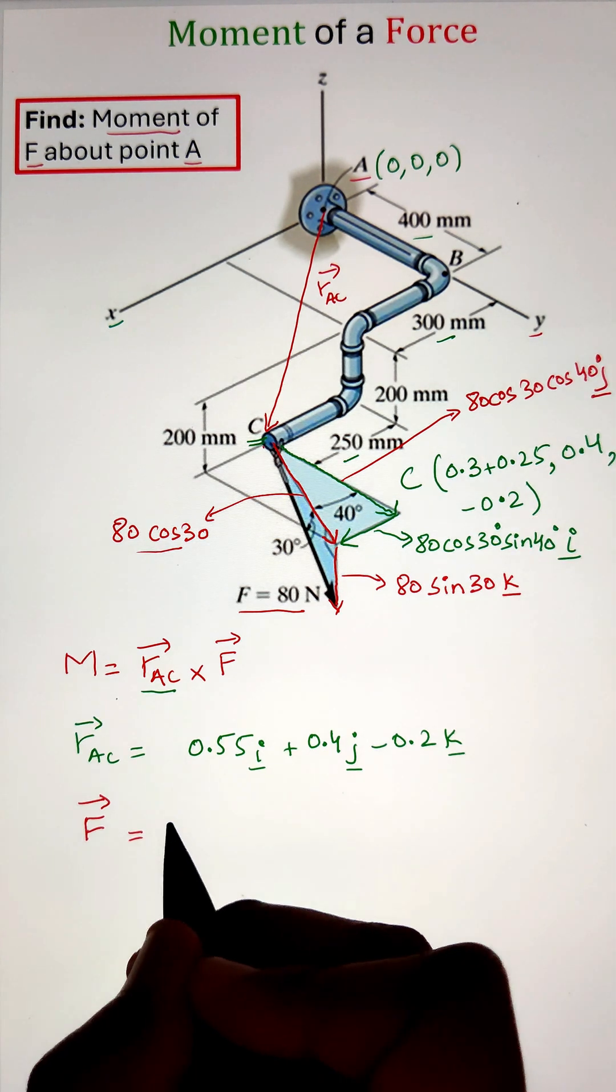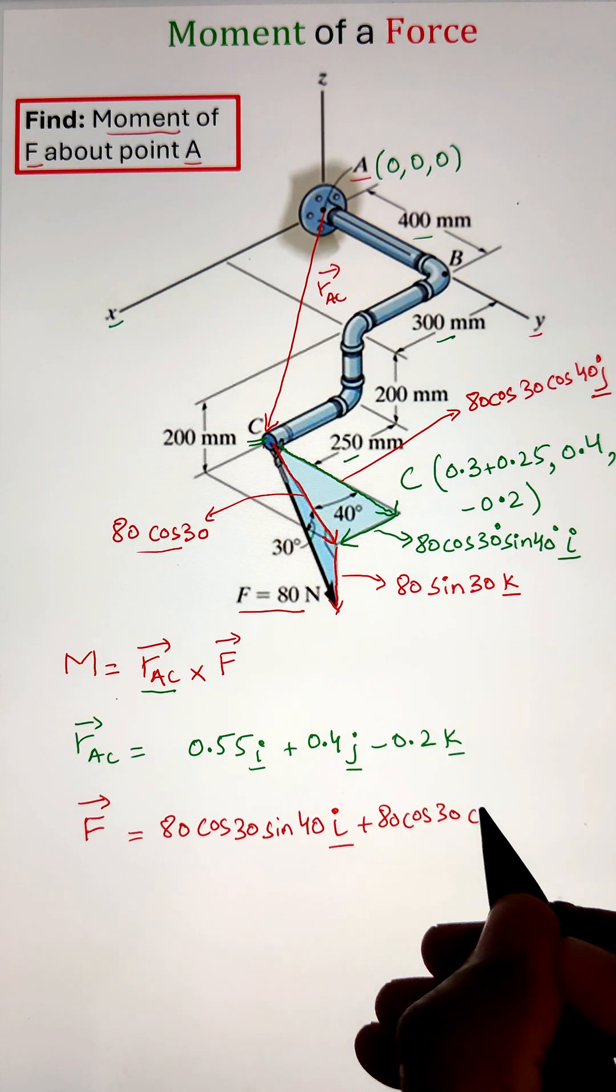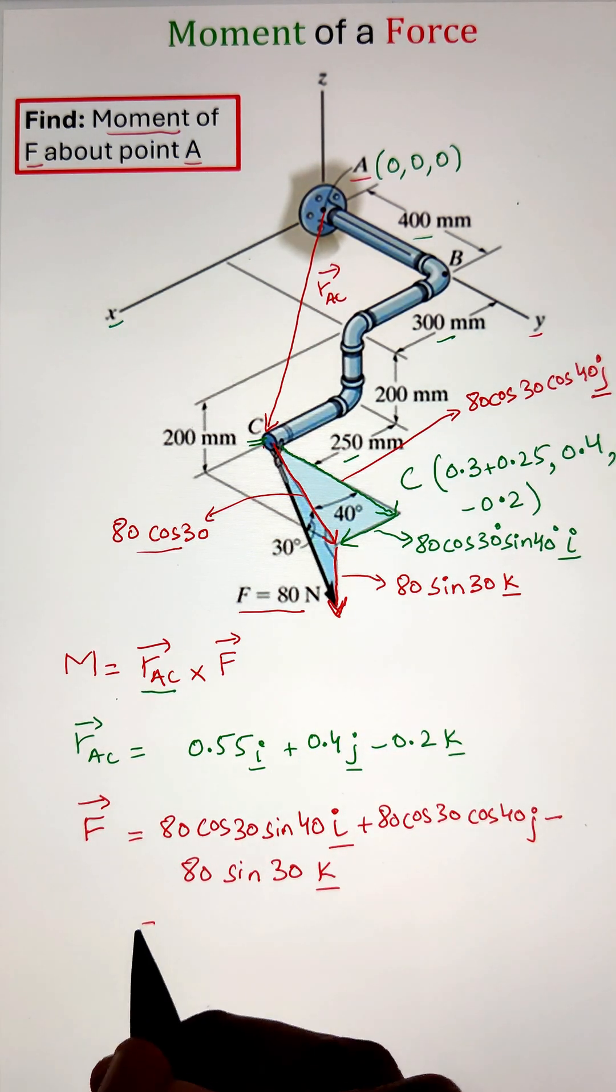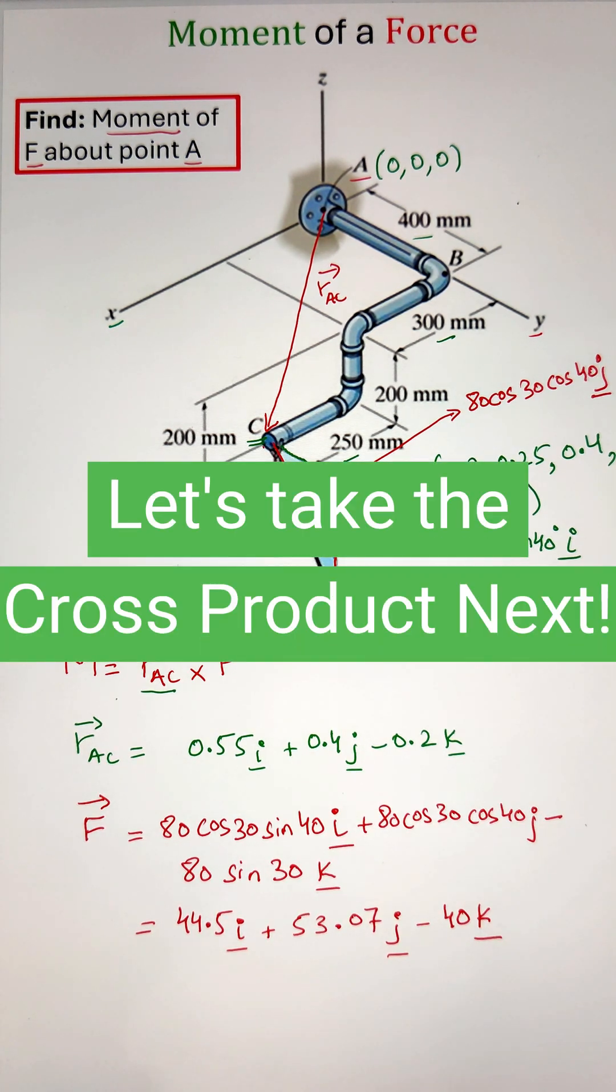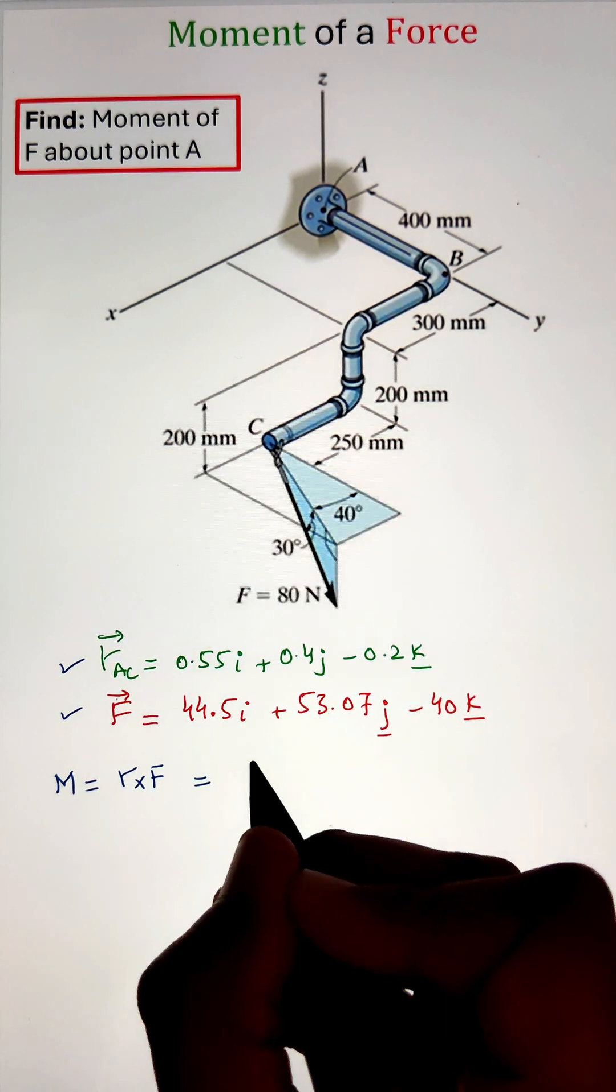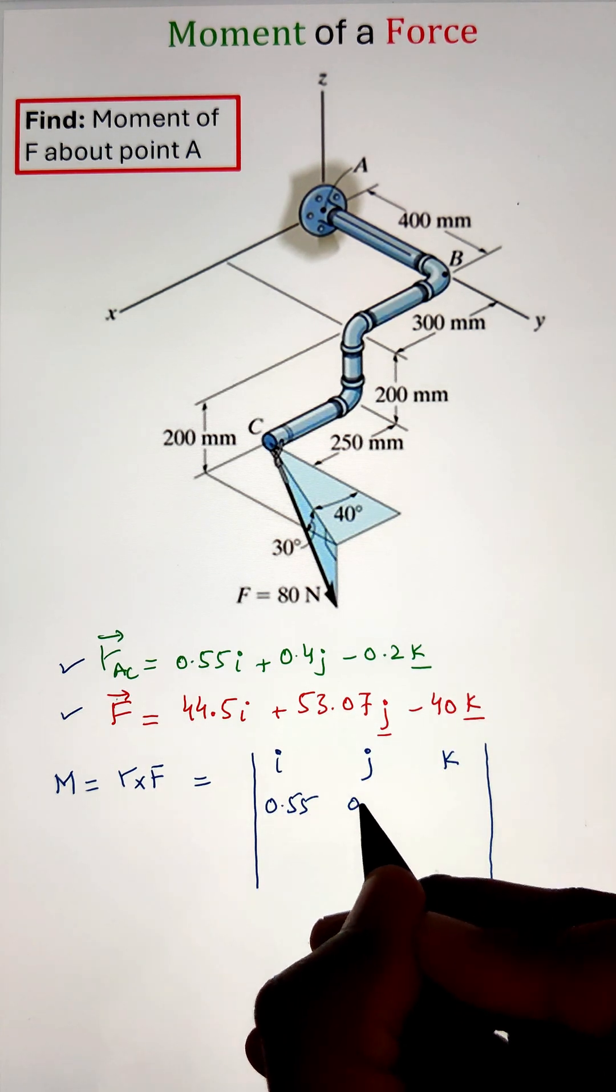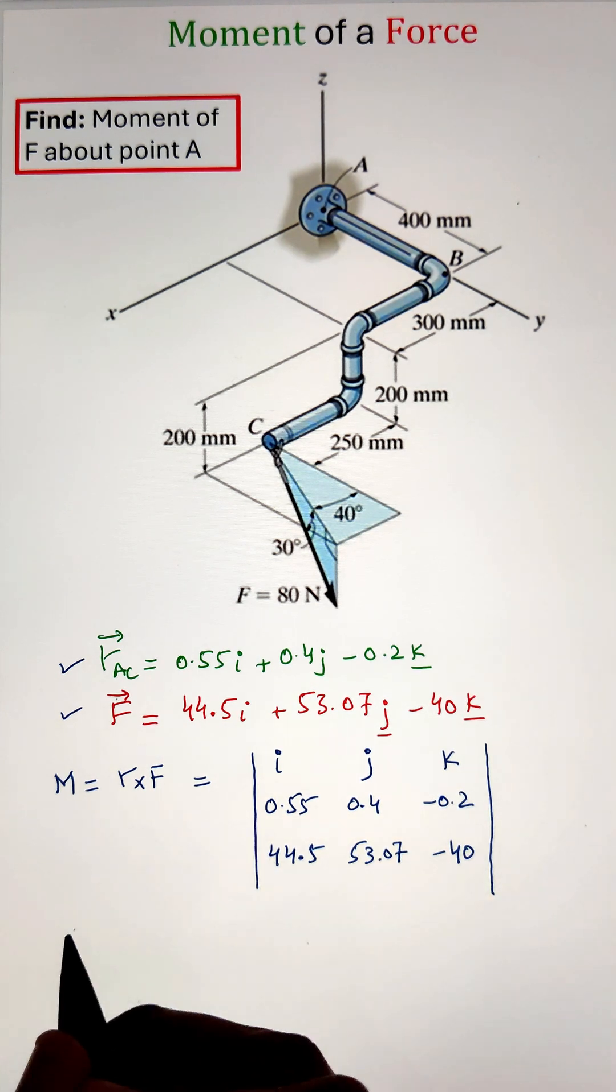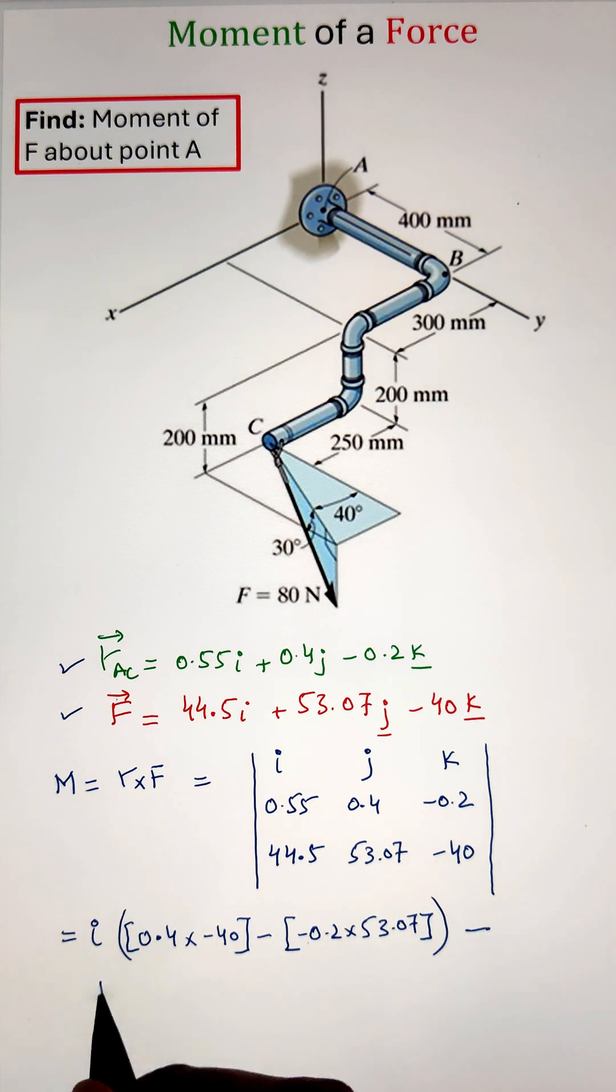Simplifying it gives us the value of force of 44.5i plus 53.07j and 40k newtons. Next, to calculate the moment, we need to take the cross product between the position vector and the force vector. One important point to remember while taking the cross product is that the cross product does not follow the commutative law, which means that r cross f won't be equal to f cross r.